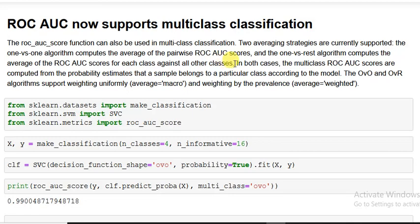That is the methodology we are going to calculate in multi-class. So in both cases, the multi-class ROC AUC scores are computed from the probability estimates that a sample belongs to a particular class according to the model.